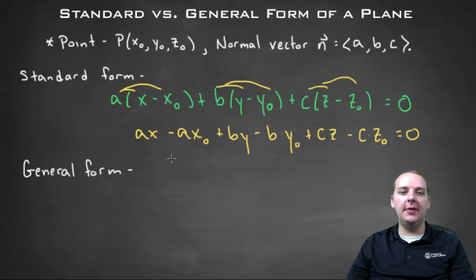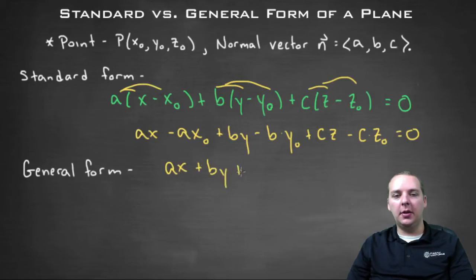And then, what if you saved the a, x, the b, y, and the c, z, the terms with the variables? You would have a x plus b y plus c z equals, and let's move the a x-not, the b times y-not, and the c times z-not.